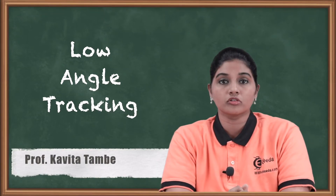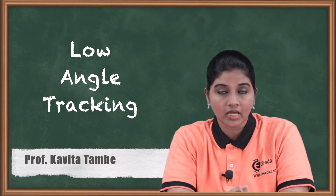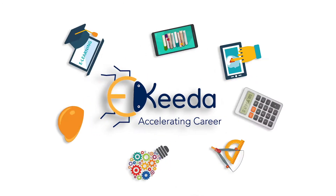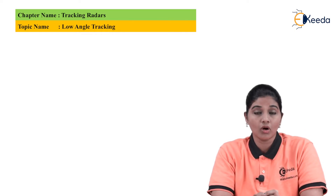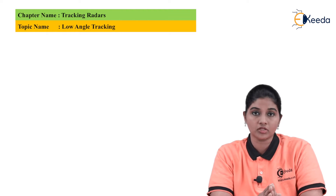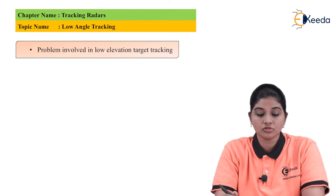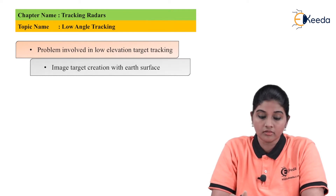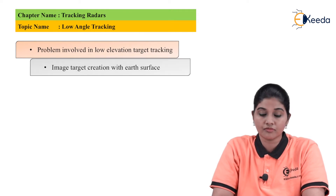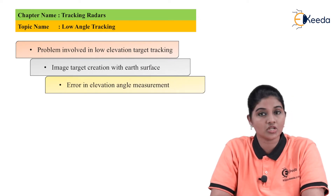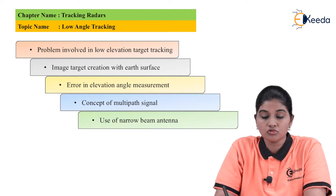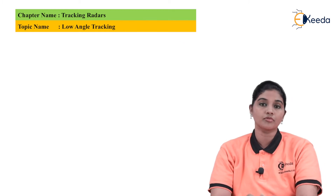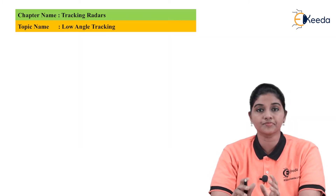Hello friends, in this video we are going to talk about low angle tracking, the problems related with it, and how to overcome those problems. We will discuss problems in low angle elevation tracking, image tracking with the earth's surface, various errors in elevation angle measurement, the concept of multipath signal, the use of narrow beam antenna, and finally some MCQs.